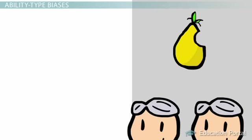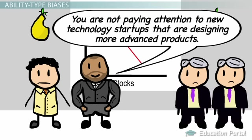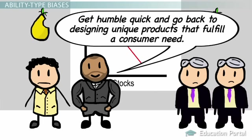As with most successful companies, Pair Products felt that they were untouchable and that they could slap their Pair emblem on any product and it would sell. They were overconfident due to their many years of success. The consultant found that they were not paying attention to new technology startups that were designing more advanced and cooler products. His first recommendation was to get humble quick and go back to designing unique products that fulfill a consumer need.